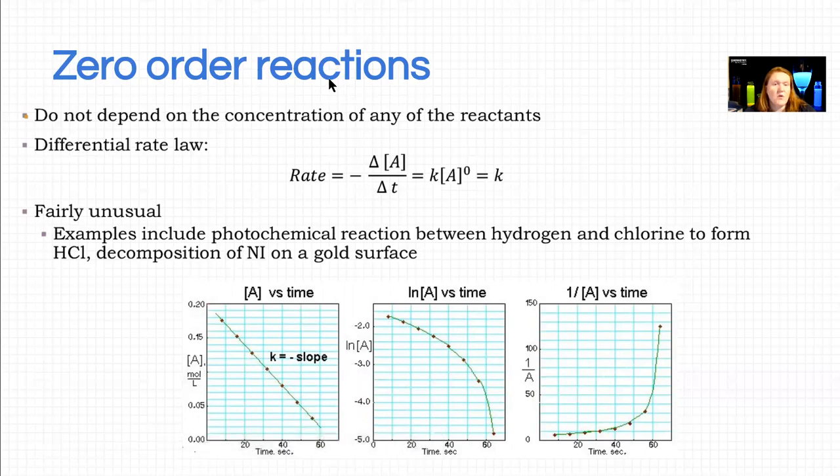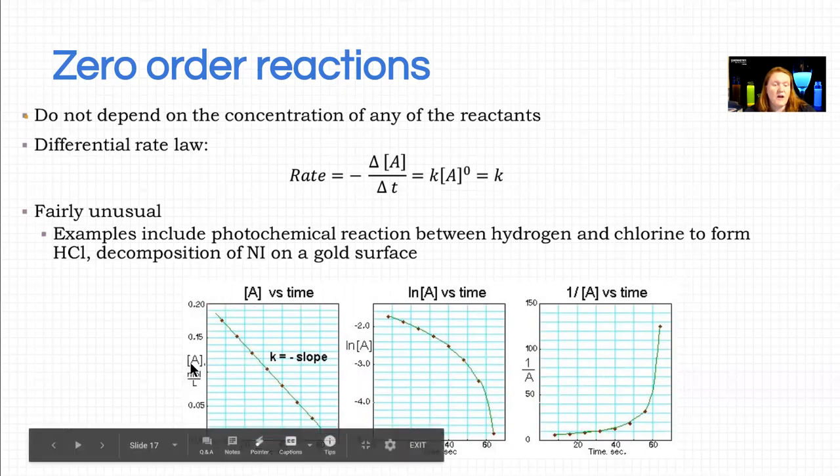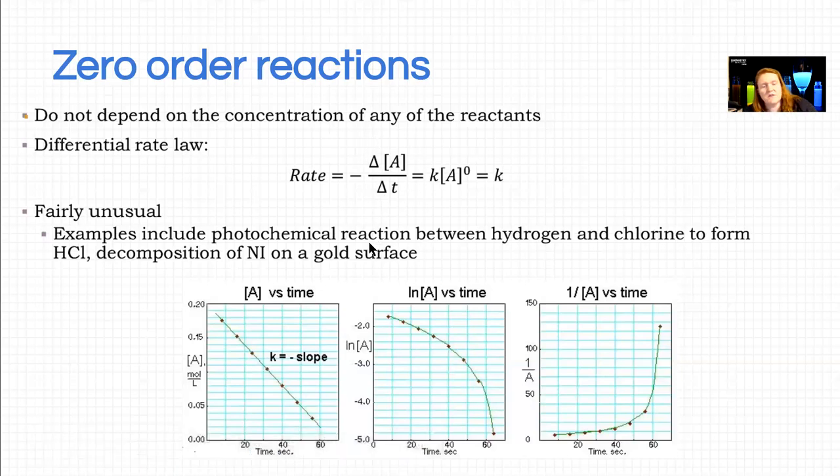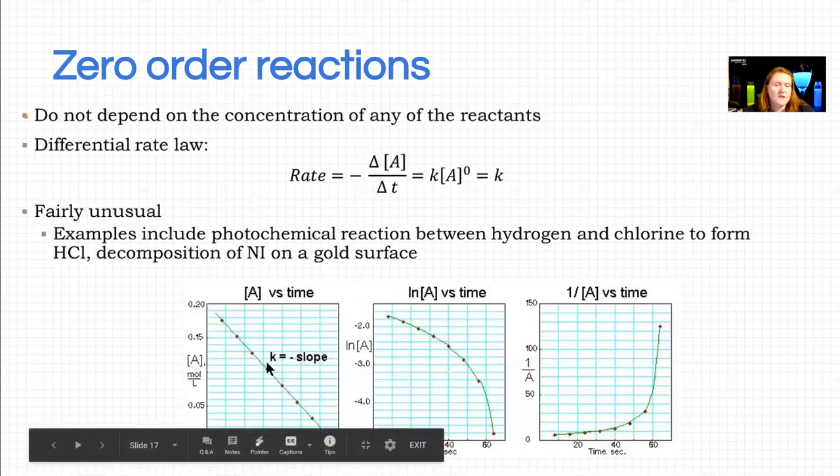So a zero order reaction is linear when you plot concentration of the reactant. Go away. I don't know why that keeps popping up all the time. So concentration of the reactant versus time, in this case seconds. Here, what we notice is when we do this, because of the definition for change in A over change in time, our slope is actually equal, the negative of the slope is equal to K.